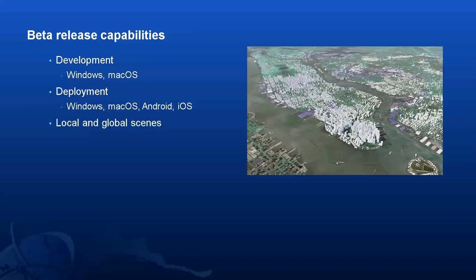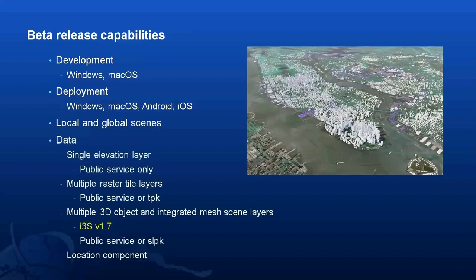Both local flat-earth experiences and global round-earth experiences are available. Local supports display of geographic data on a planar surface and works with different projected coordinate systems, usually appropriate for smaller local areas. Global supports the display of geographic data on a sphere or globe, usually appropriate for large areas or regions. Data sources accessible by the plugins include a single elevation service for terrain — an image service hosting LERC-encoded tiles with elevation values — including ArcGIS Online world elevation services for terrain and bathymetry.